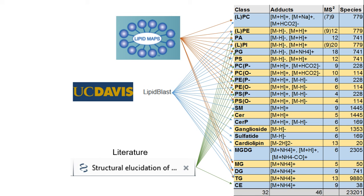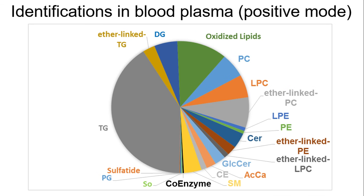One of the big advantages of LipidMatch is that the number of lipids identified is often higher than other software, due to its very comprehensive libraries. Currently, LipidMatch has over 250,000 lipid species across 71 lipid types, with sources including literature, Lipid Maps, and other software such as LipidBlast and MS-Dial. Here's an example of some of those lipid types identified in a pie chart from blood plasma in positive ion mode. You can see some unique lipids, including ether-linked triacylglycerides, oxidized lipids, coenzymes such as coenzyme Q9 and Q10, and sulfatides — many lipids that aren't carried in MS-Dial or Greasy.